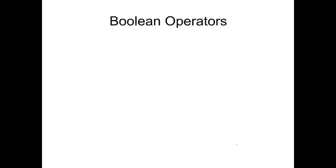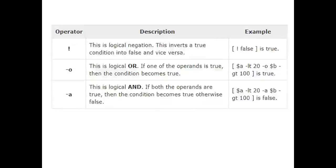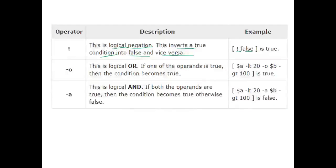Next we have boolean operators, which we use to return true or false. The first operator is the logical negation operator — this inverts a true condition into false and vice versa. The way to use this operator is to include your operator with true or false. If the value is false, it is going to return true — meaning it inverts a true condition into false and false into true.